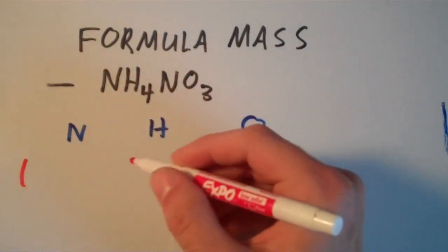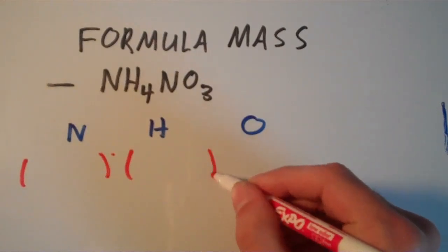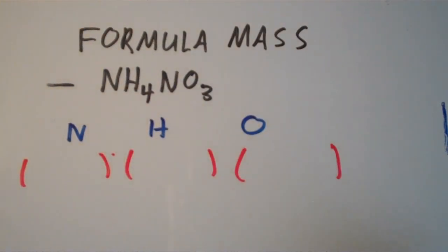And we look up the atomic masses for nitrogen, hydrogen, and oxygen. And then we also take into account how many atoms of each element there are.